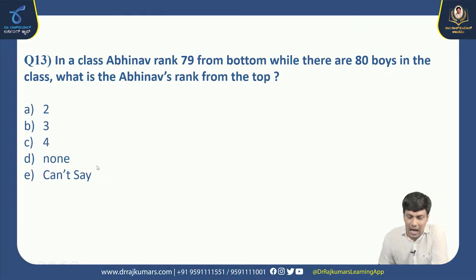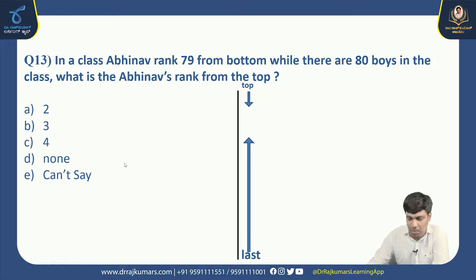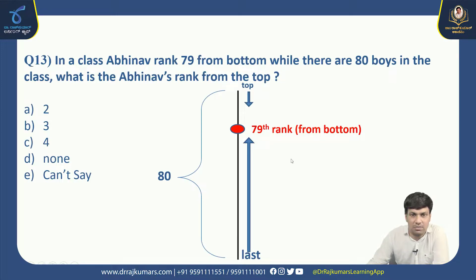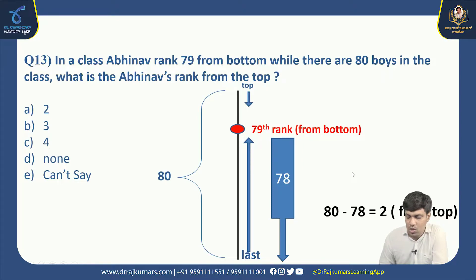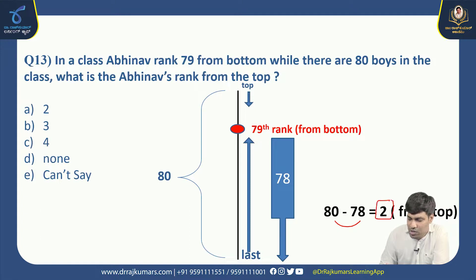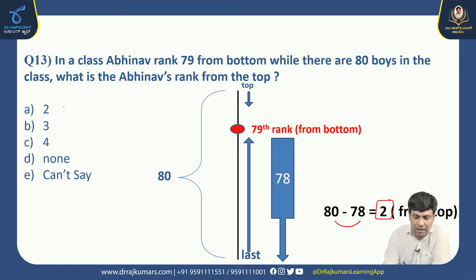Next: In a class, Abhinav's rank is 79th from the bottom, and there are 80 boys in the class. What is Abhinav's rank from the top? There are 80 students. Abhinav is in 79th position from the bottom, meaning behind him there are still 78 students. We minus 78 from the total: 80 minus 78 equals 2. So Abhinav's rank from the top is 2nd. Right option is A.